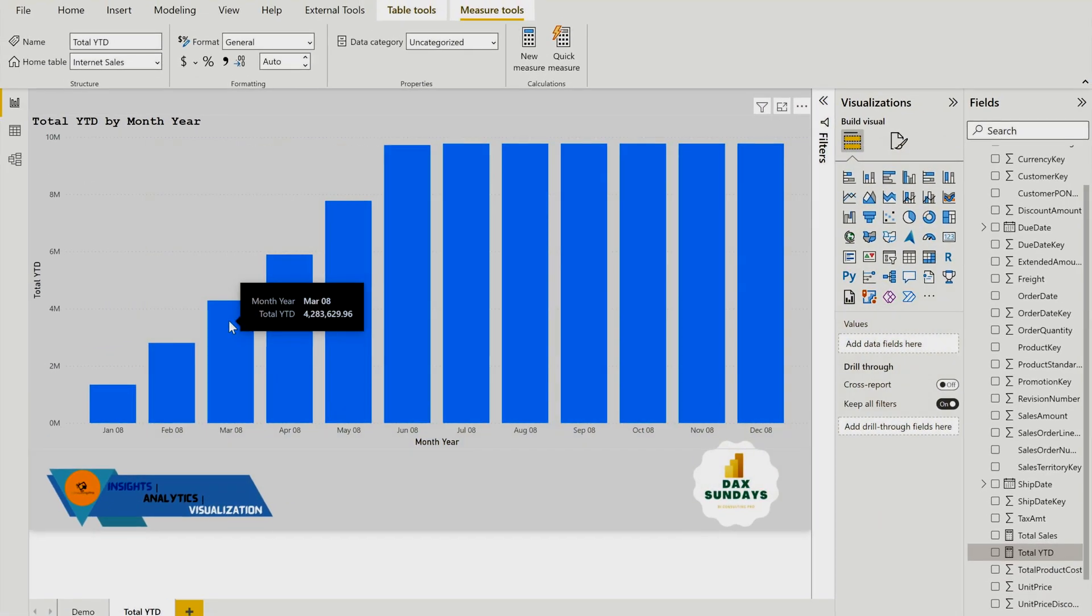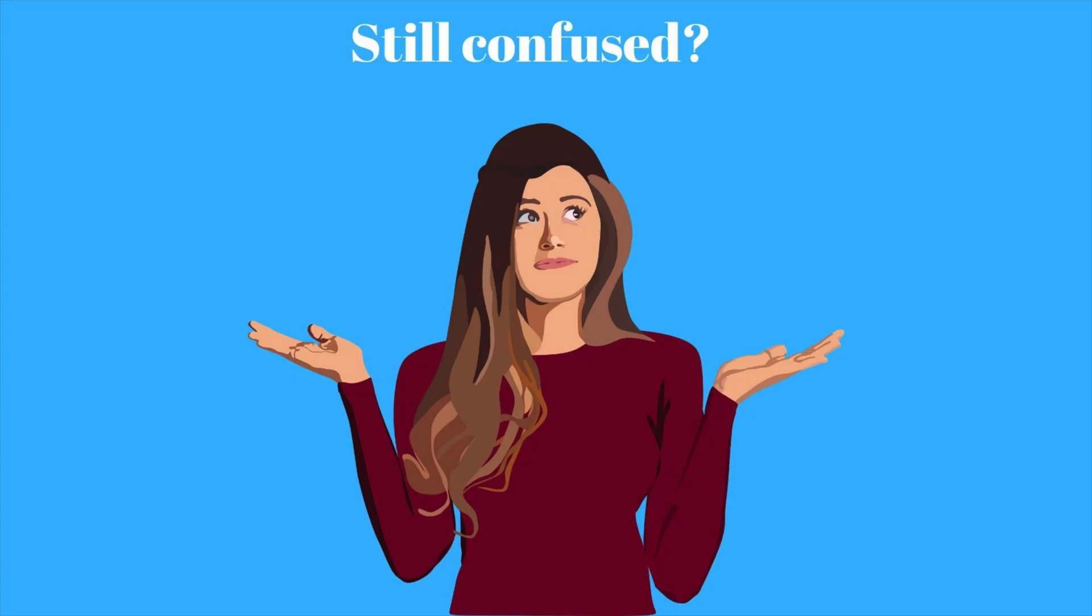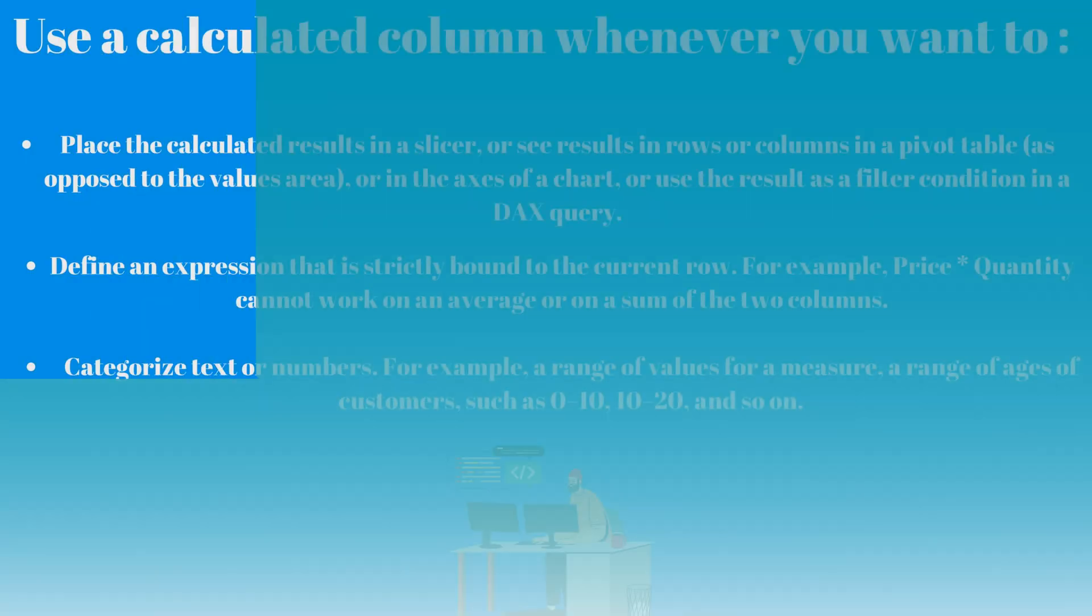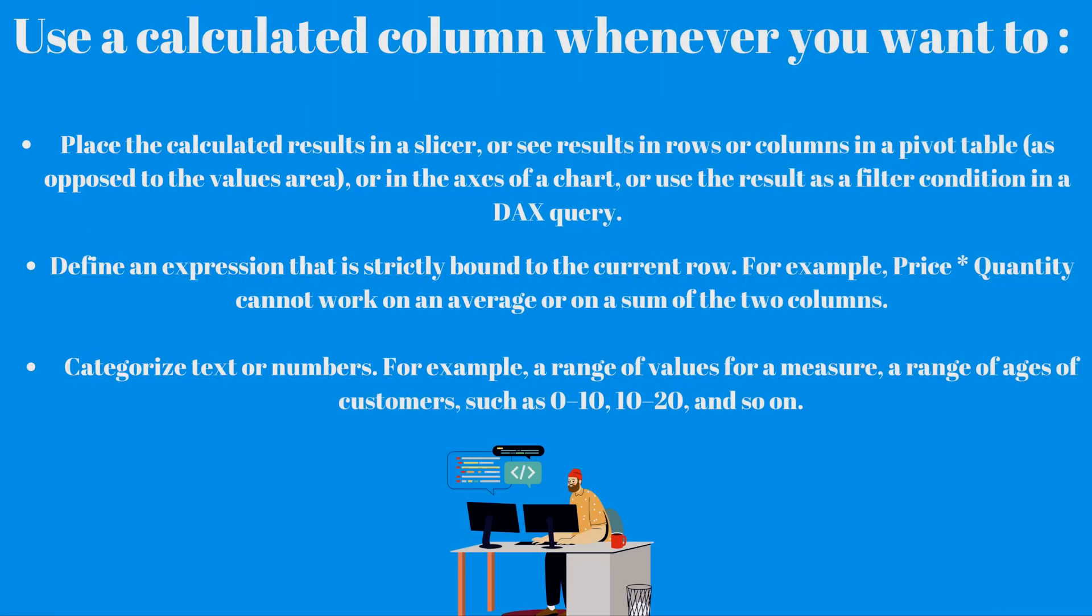At this point it is very important for you to know when you should go for a calculated column or when you should go for a measure. You should use it whenever you want to place the calculated results in a slicer or see results in rows or columns in a pivot table. Secondly, you can use it whenever you want to define an expression that is strictly bound to the current row, for example when you have to get the results of price multiplied by quantity. In another case, whenever you want to categorize text or numbers, for example range of values of a measure or a range of ages of a customer such as 0 to 10, 10 to 20, and so on, in that case also you can use it.